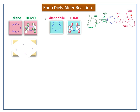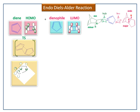This is the exo-transition state. Now we see the orbital interaction in the exo-transition state. This is the HOMO of cyclopentadiene and this is the LUMO of cyclopentadiene. Here we can see the primary orbital interaction to form a sigma bond, which leads to the exo-product.